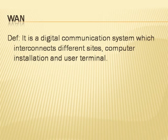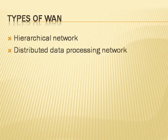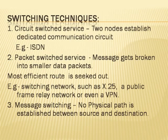MAN is a digital communication system which interconnects different sites or smaller LAN segments. There are two types. Switching techniques: circuit switched service, where two nodes establish a dedicated communication circuit — example ISDN. Packet switched service, where messages get broken into smaller data packets and the most efficient route is sought out — example X.25.